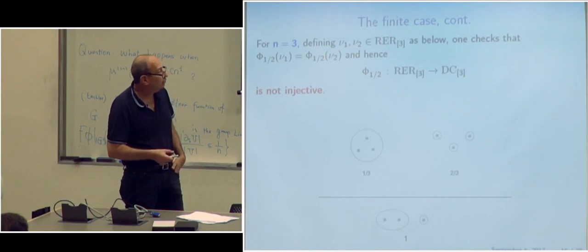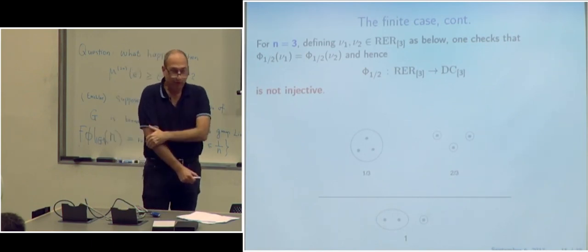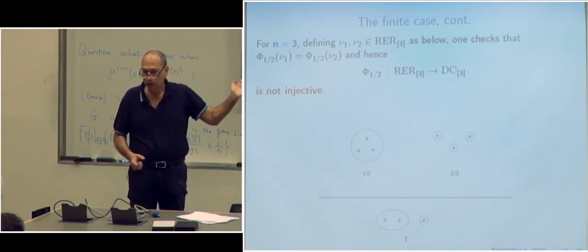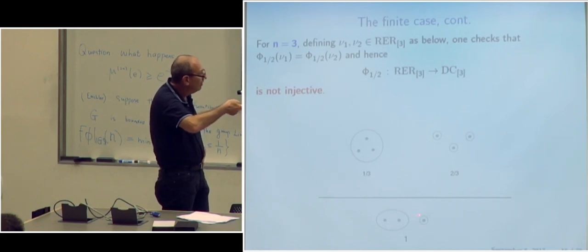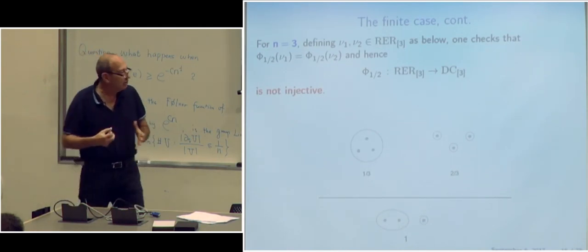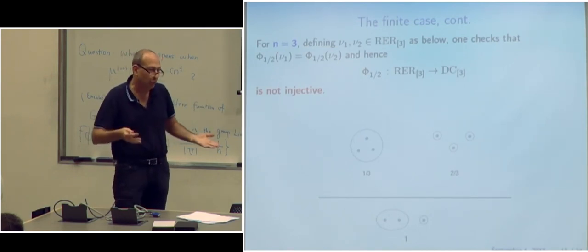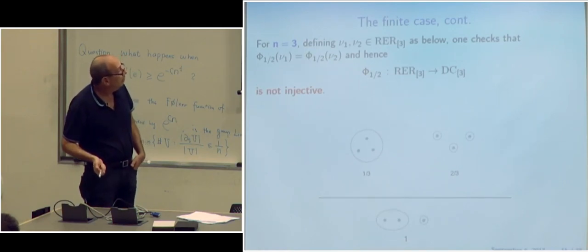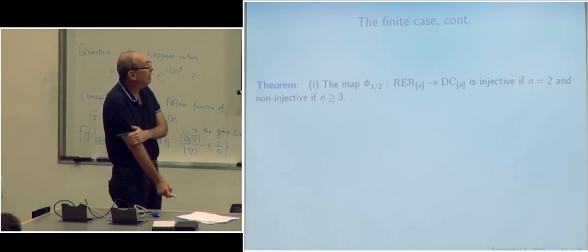Here are the two random partitions for N = 3. In the first, with probability 2/3 everyone is in one cluster, and with probability 1/3 everyone is in their own cluster. In the second, I do a 2-1 split chosen uniformly among the three possible 2-1 splits. These yield the same color process when P = 1/2. So: Φ_{1/2} is injective when N = 2 and non-injective when N ≥ 3. For P ≠ 1/2, the mapping is injective for N = 2 or 3, but non-injective when N ≥ 4.